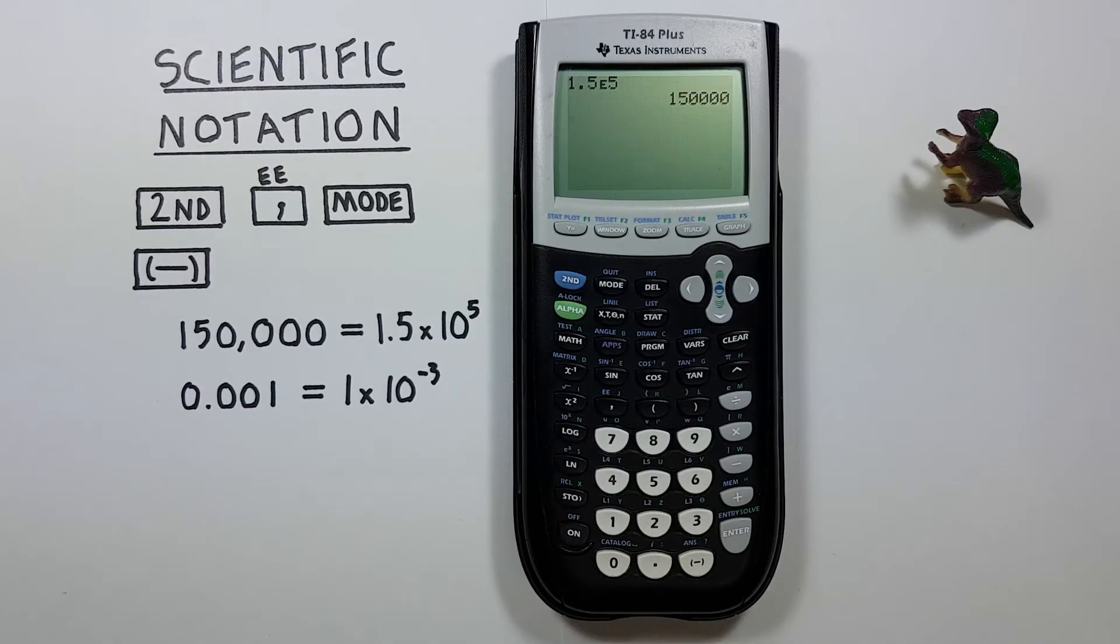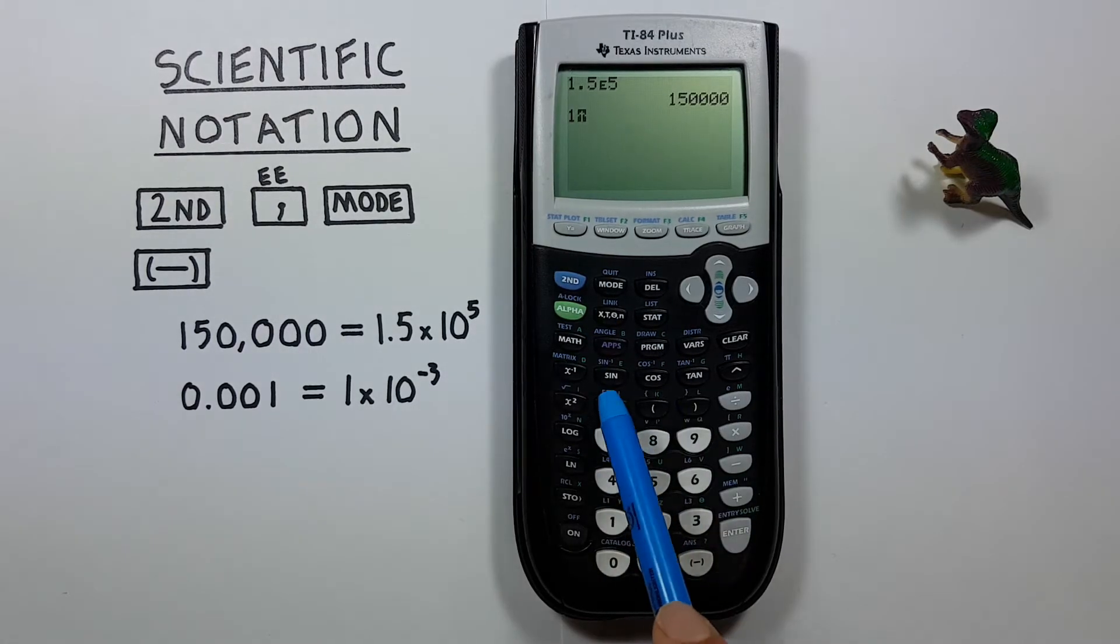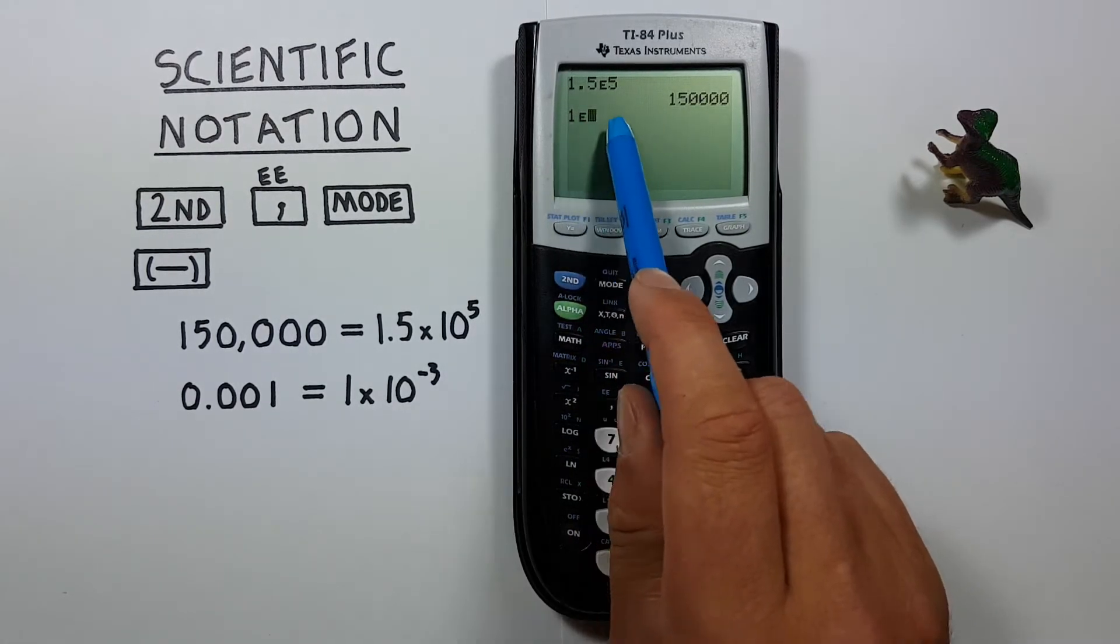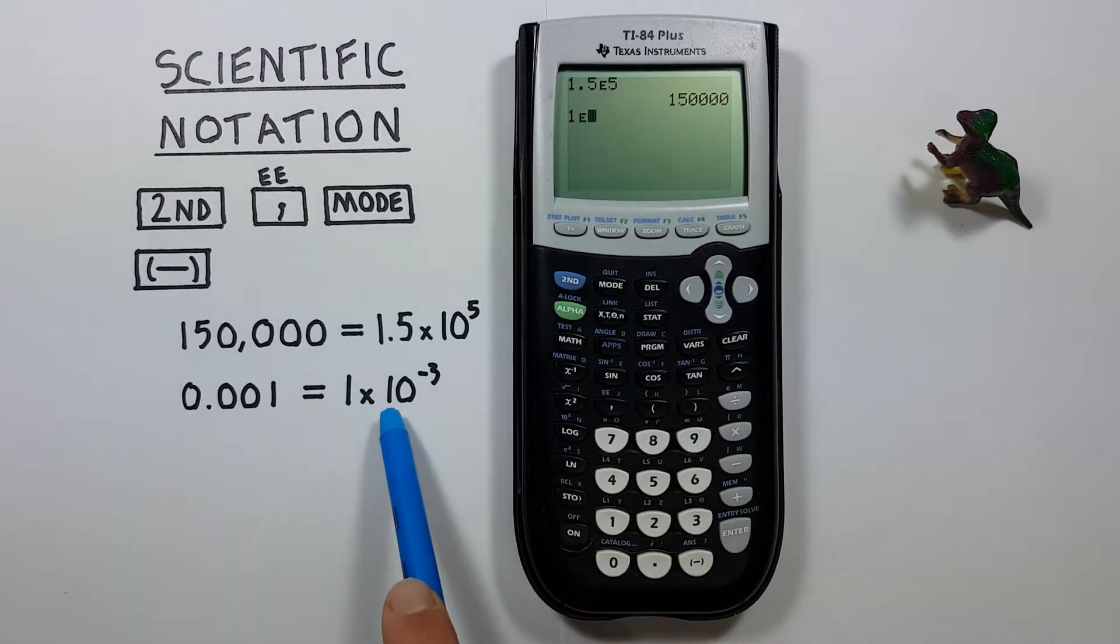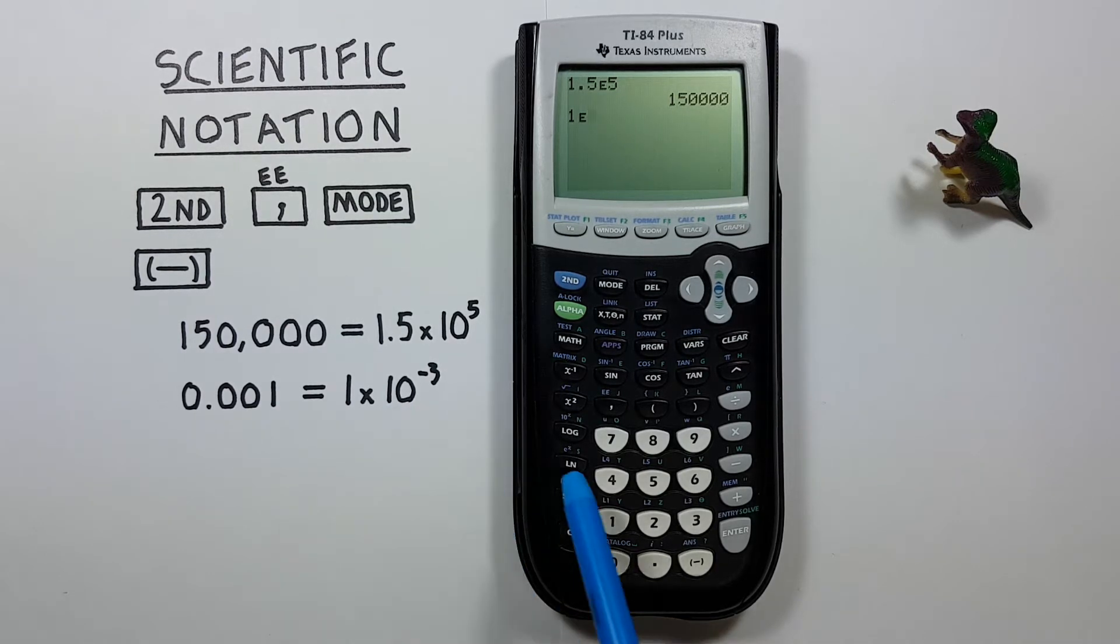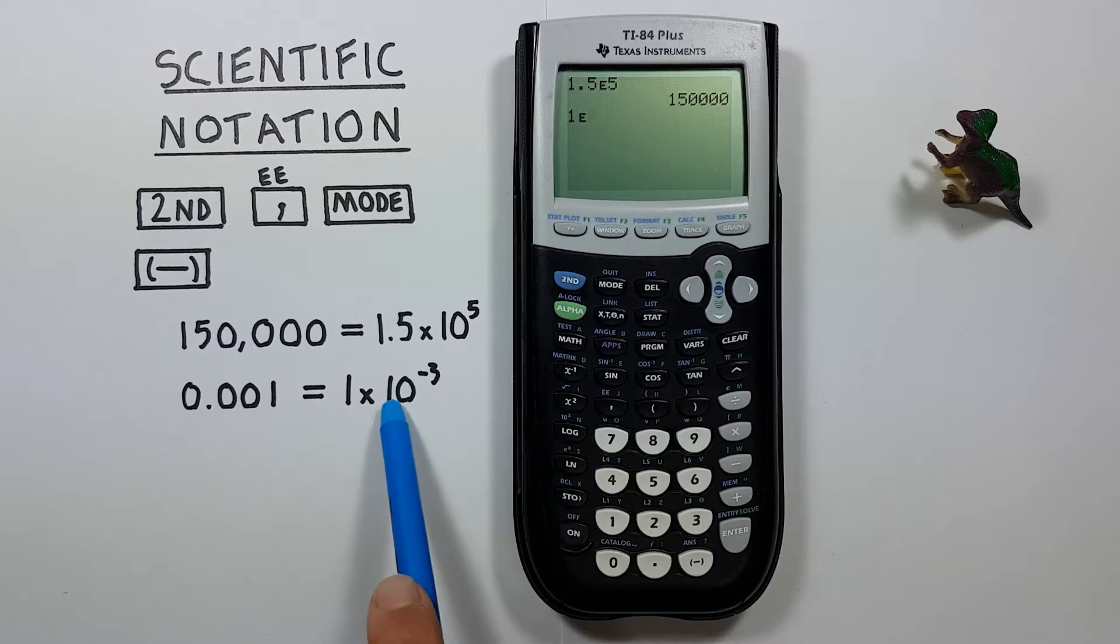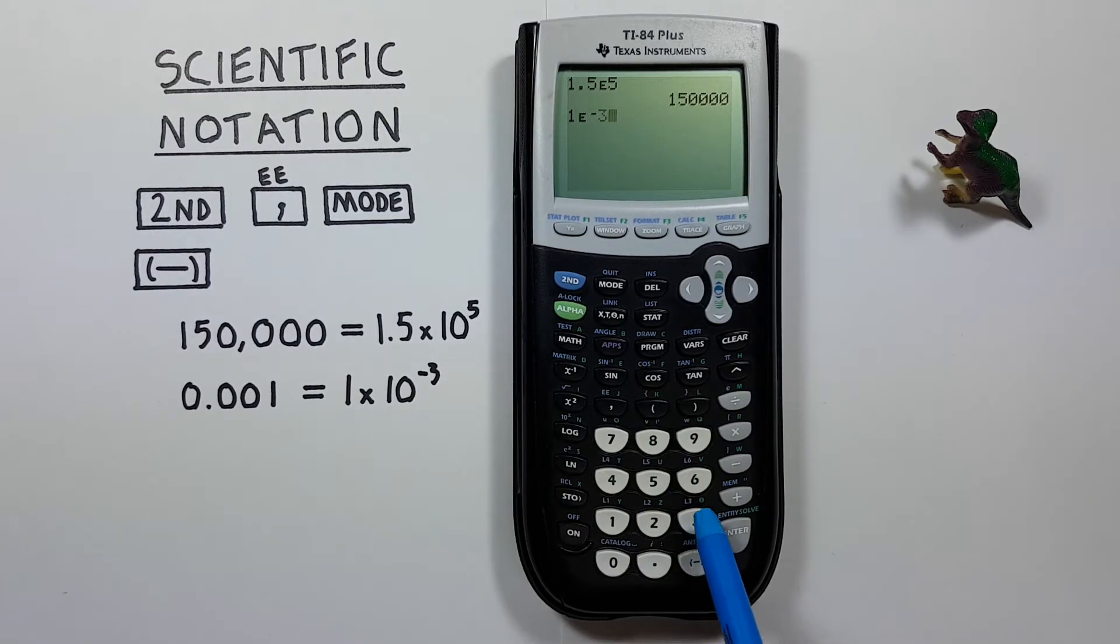This also works for small numbers. If we're given something like 1 times 10 to the power of negative 3, we can enter it like this. First the 1, then the second function, comma, there's that E. Remember that represents the times 10. And then we want to use the negative to indicate the negative 3 here. Note that's different from the minus key. We want this key down here with the negative in brackets, and the 3.